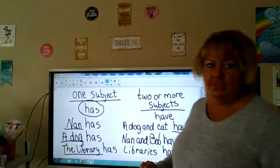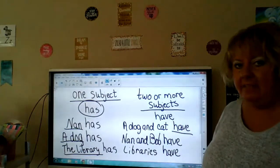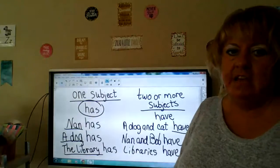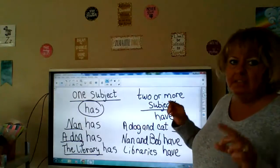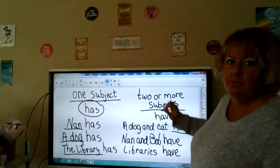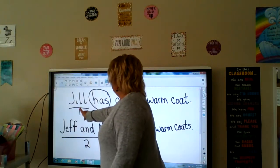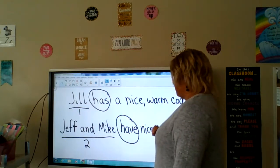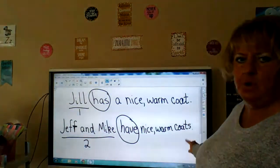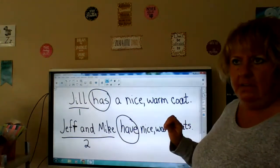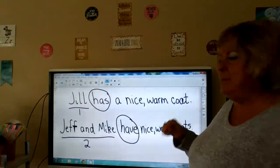If it's two or more subjects, we use have for present tense. A dog and cat have food. Nan and Bob have a house. Libraries have books. So has is for one subject and it means it's happening right now. Have is for two or more subjects and that means it's happening right now. Jill is one person — right now she has a nice warm coat. Jeff and Mike are two people, and right now they have nice warm coats.